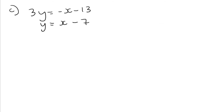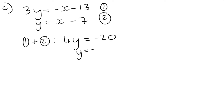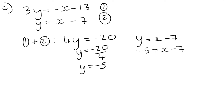For part c, we find the point of intersection using simultaneous equations. Equation 1 is 3y = -x - 13 and Equation 2 is y = x - 7. Both have a singular x, one negative and one positive, so add them to eliminate x: 4y = -20, giving y = -5. Substituting into Equation 2: -5 = x - 7, so x = 2. The point of intersection is (2, -5).